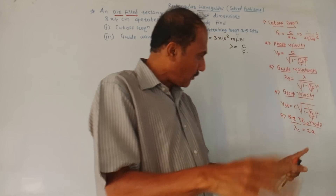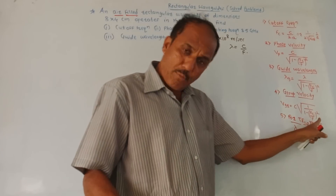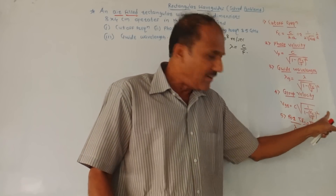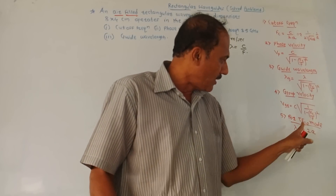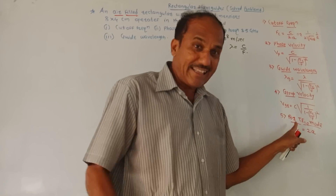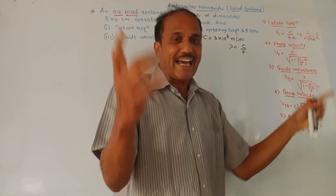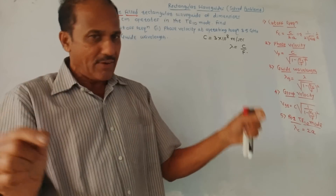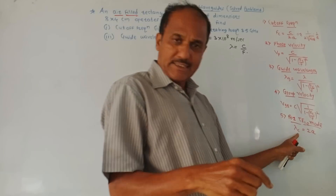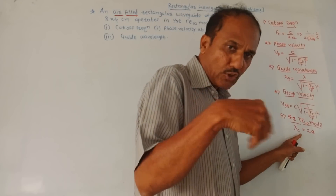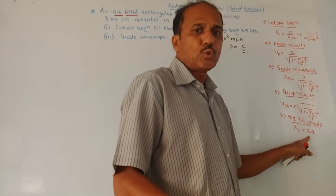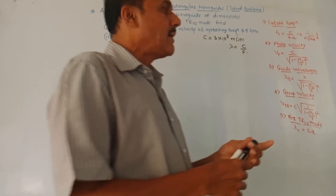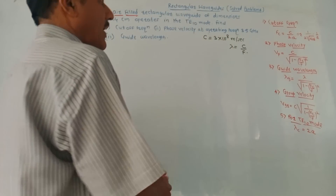Do remember the basic formula for dominant mode or for TE10 mode: cutoff wavelength lambda c should be equals to 2 times a, where a is the breadth of the waveguide.